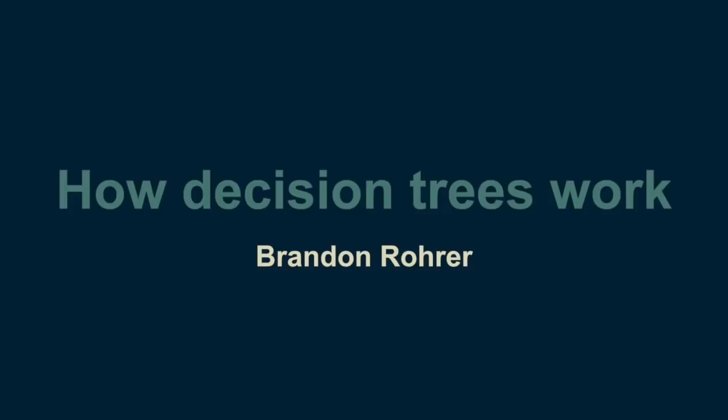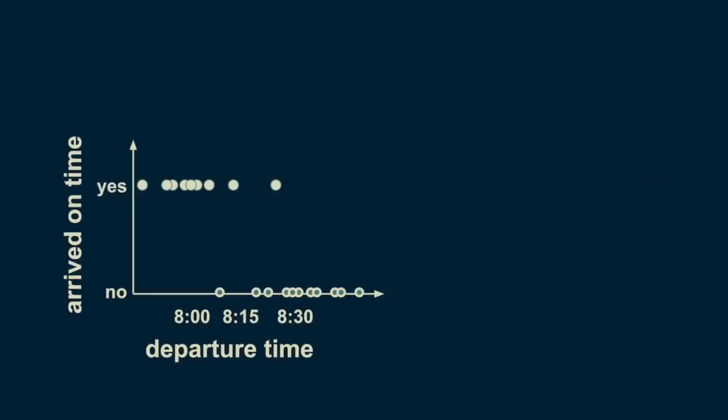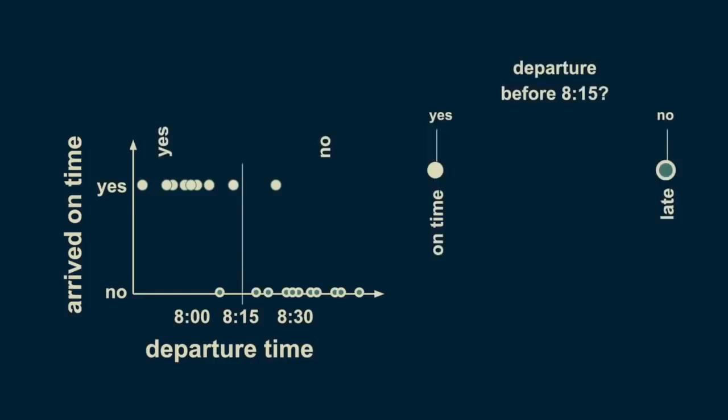The concept behind decision trees is refreshingly straightforward. Imagine creating a dataset by recording the time you left your house and noting whether you arrived at work on time. Looking at it, you can see that for the most part, departure times before 8:15 result in punctuality, and departure times after 8:15 result in tardiness. You can summarize this pattern in a decision tree. The very first branching point is the question: did departure occur before 8:15?